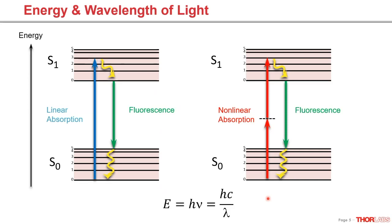There is a relationship between energy and wavelength of light — it's inversely proportional. A photon on the blue side of the visible spectrum has a shorter wavelength but higher energy. That's why I'm depicting the blue arrow as the higher energy photon being absorbed and then a lower energy green photon being emitted. In the non-linear process, the two photons being absorbed each have half the energy of the blue photon, meaning each one actually has lower energy than the emitted fluorescence photon, which makes things interesting.